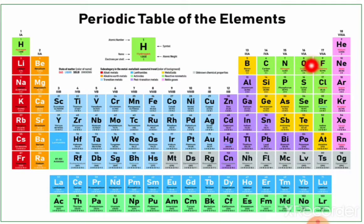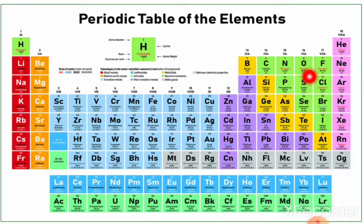Next, the oxygen family: oxygen, sulfur, selenium, tellurium, polonium. The trick letters are O, S, Se, T, P — O-S-C-T-P-O to remember the sequence.